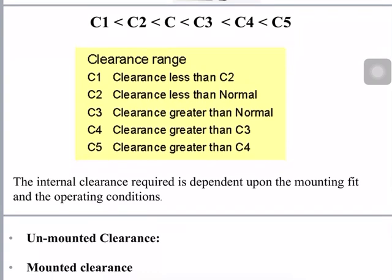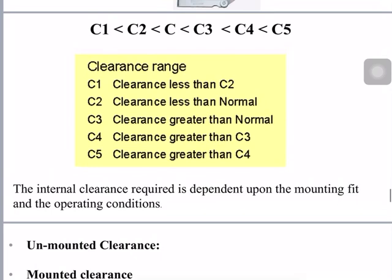Bearing clearances are broadly classified into six types: C1, C2, C (normal clearance), C3, C4, and C5. C1 is the smallest, and each subsequent class is larger than the previous: C2 is greater than C1, C is greater than C2, C3 is greater than C, C4 is greater than C3, and C5 is greater than C4. If you remember this order you will not forget about bearing clearances.